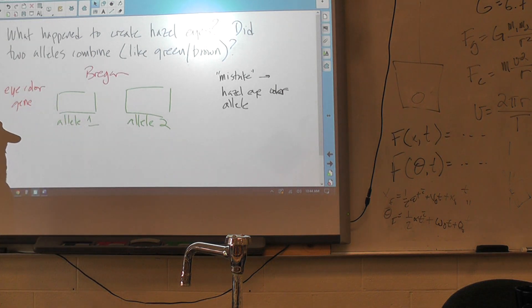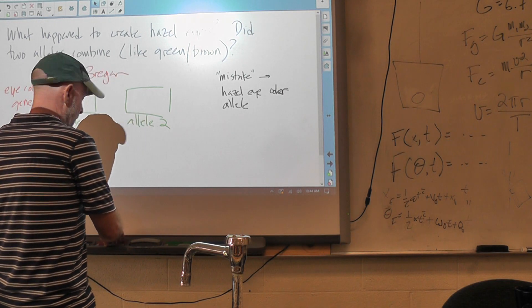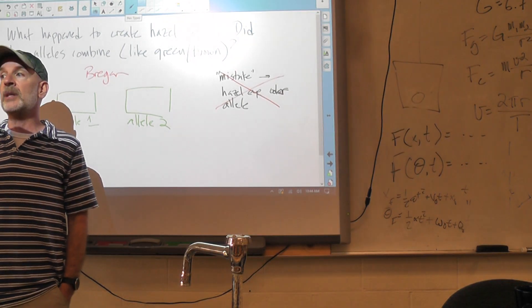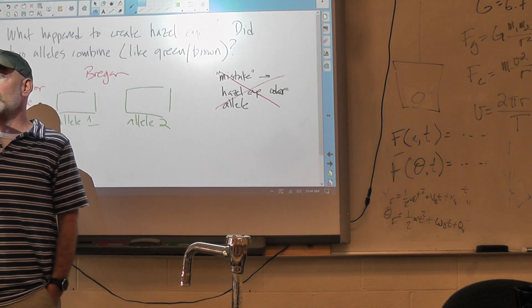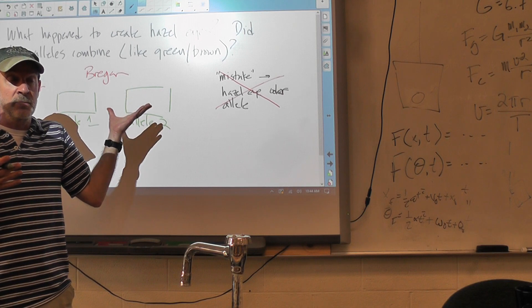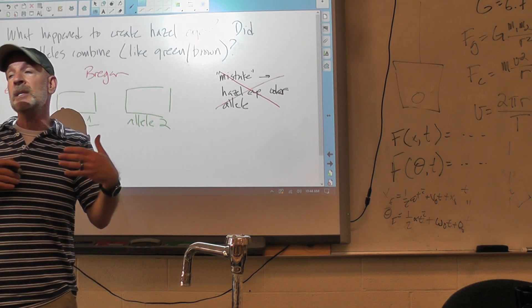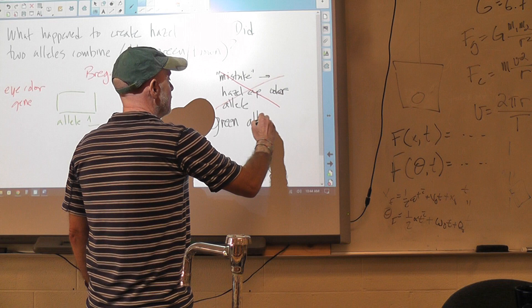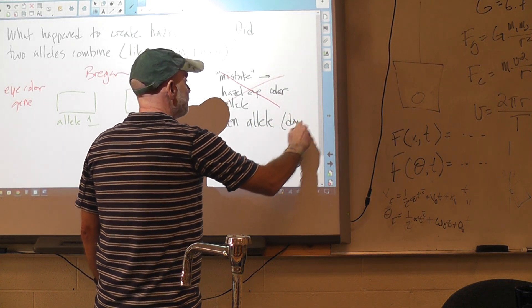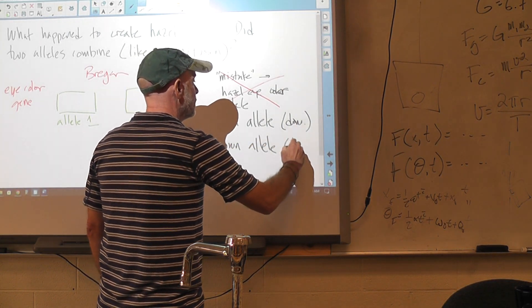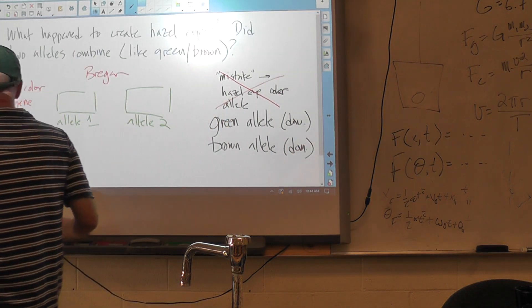There's another alternative we didn't talk about, but I think you're all capable of understanding it: rather than having a hazel eye color allele, instead some of the eye color alleles that are out there already are what we call co-dominant. So green and brown—I don't know the answer to this in terms of the actual alleles—but we could very easily come up with an argument that says, well, what if green eye color alleles are dominant and brown eye color alleles are also dominant? Then you would get hazel eyes by having one green allele and one brown allele.